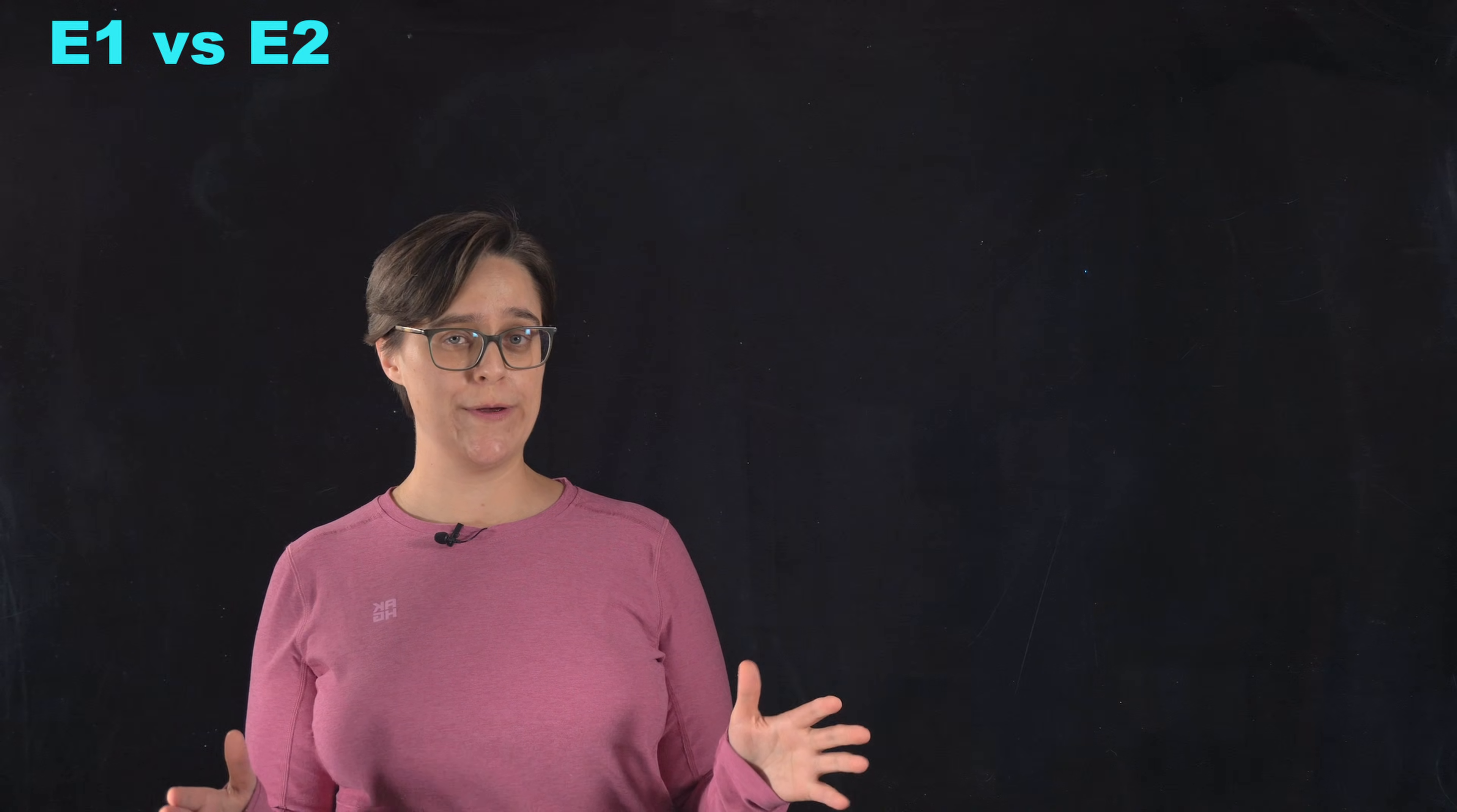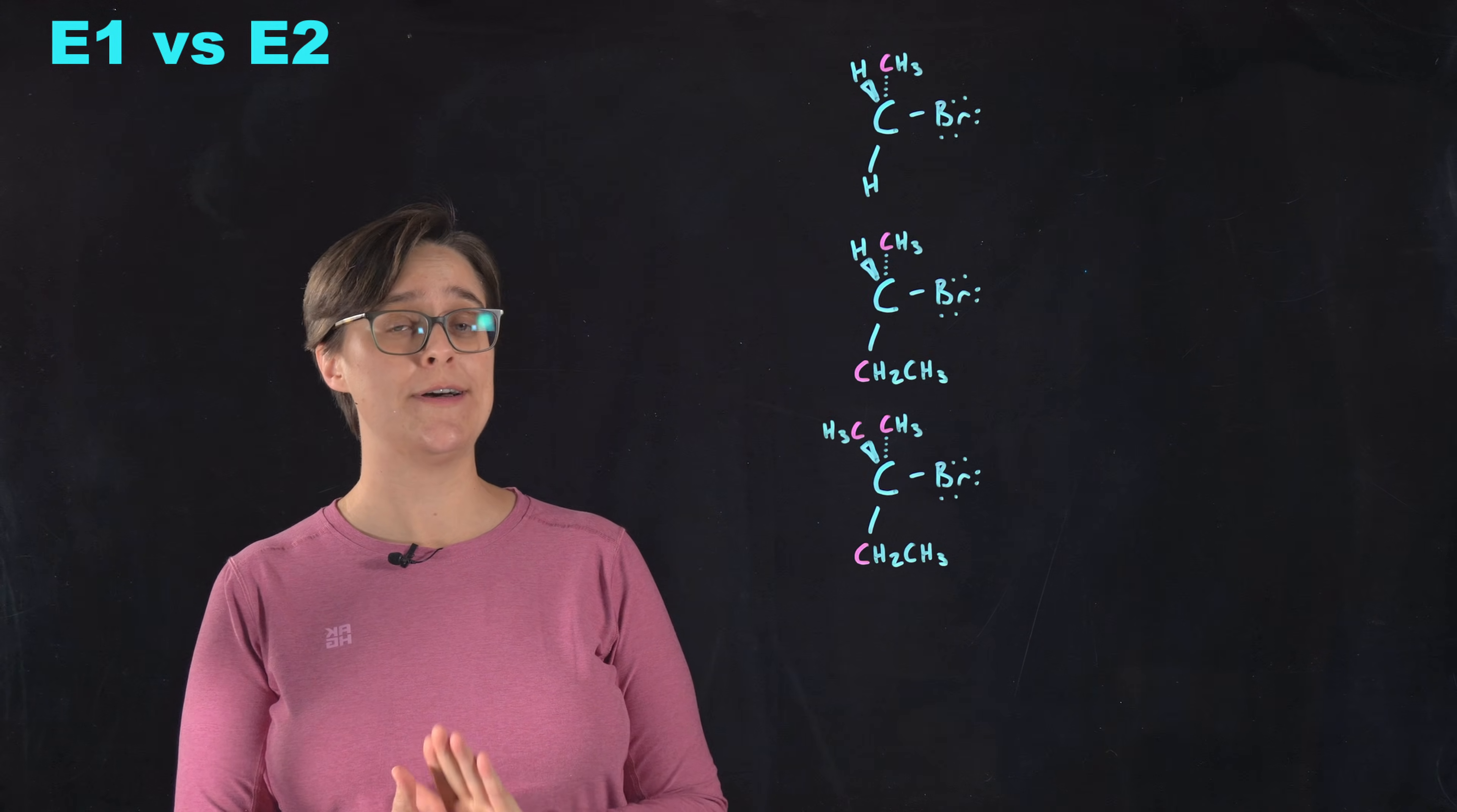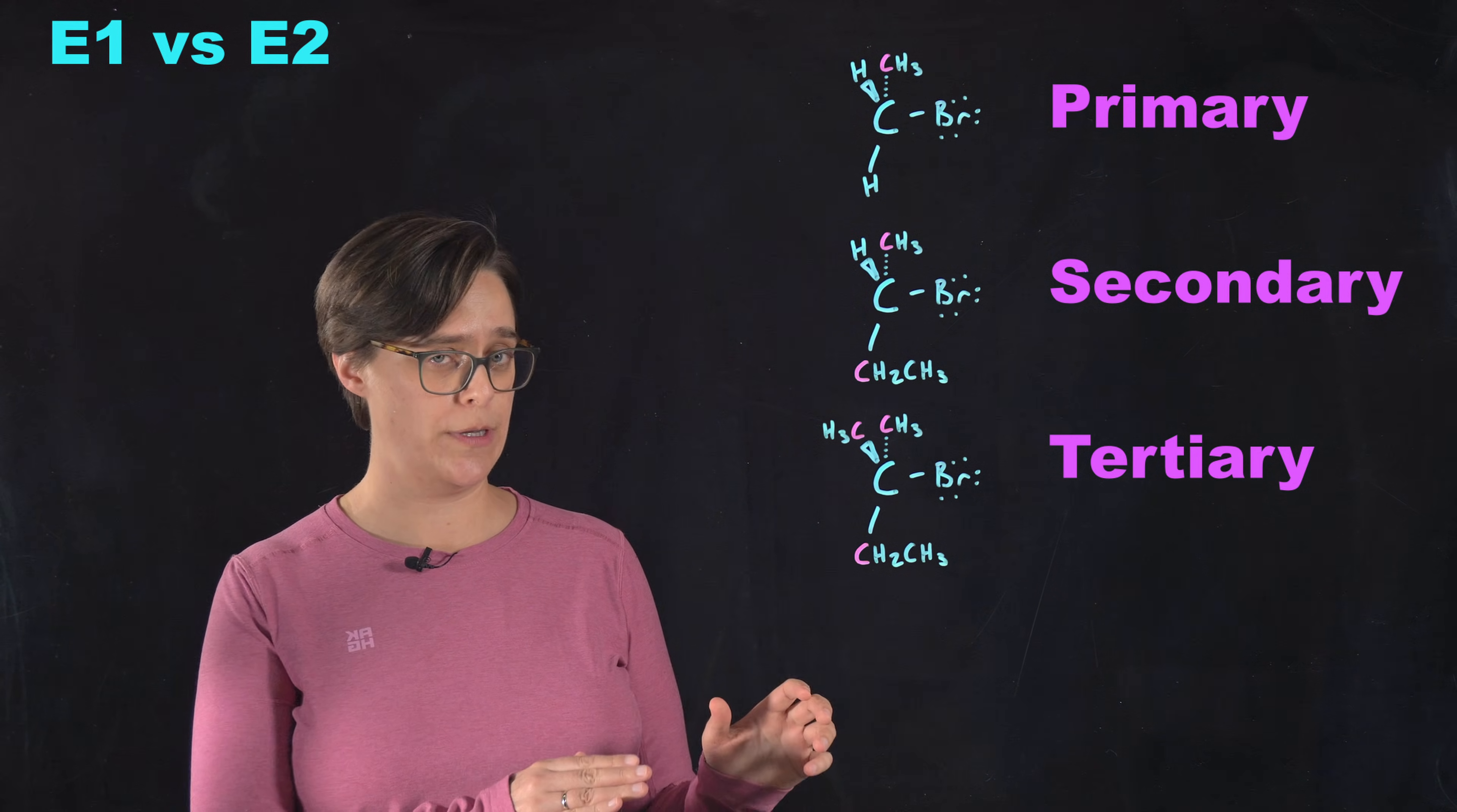So let's say you're looking at some reactants and you need to decide if E1 or E2 is more likely to occur. The first thing you should do is classify that alpha carbon. If it's a primary carbon, primary carbocations are extremely unstable, and that means E1 is not going to occur. It's going to be E2.